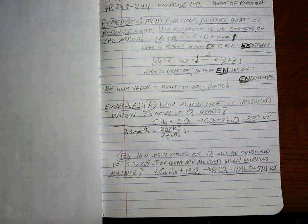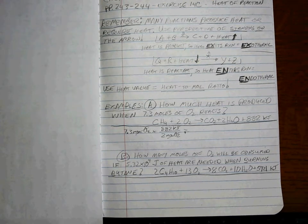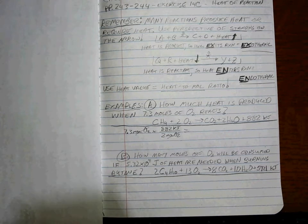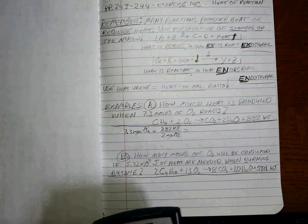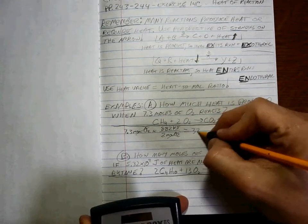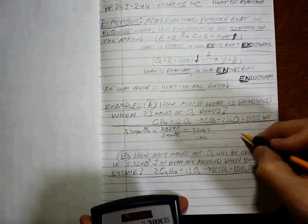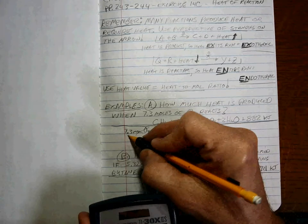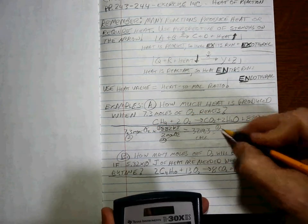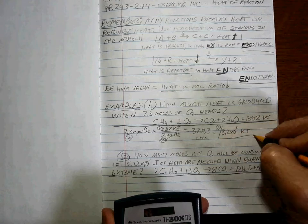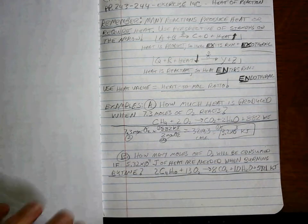Two sig figs in my answer. A simple calculation: 7.3 times 882 divided by 2 equals 3,219.3. We need to be left with kilojoules. This is 3 sig figs, this is infinite sig figs, and this is 2. So it's going to be 2 sig figs. We're talking about 3.2 times 10 to the positive 3. That's how much heat is needed.